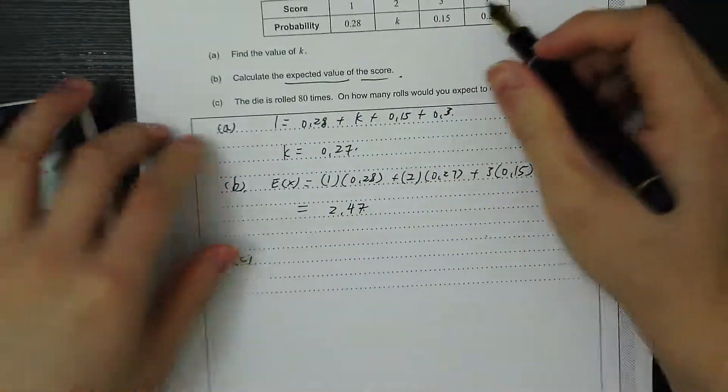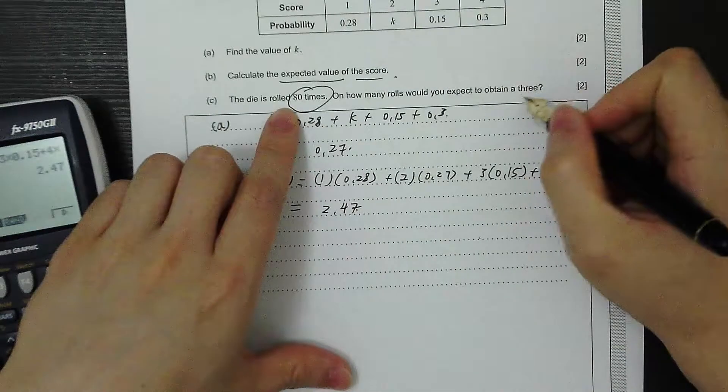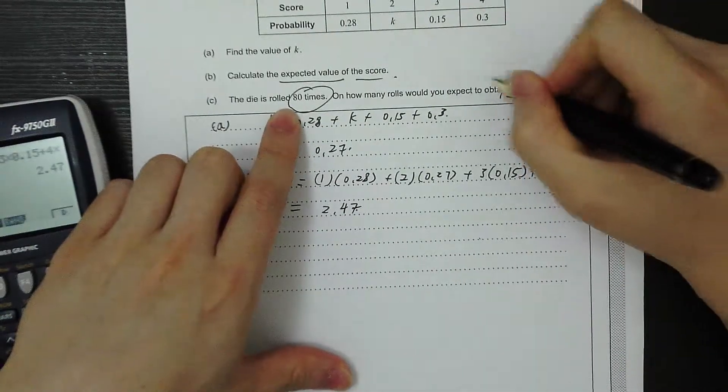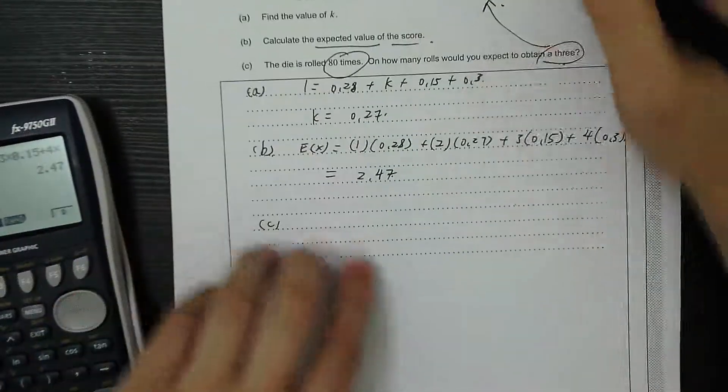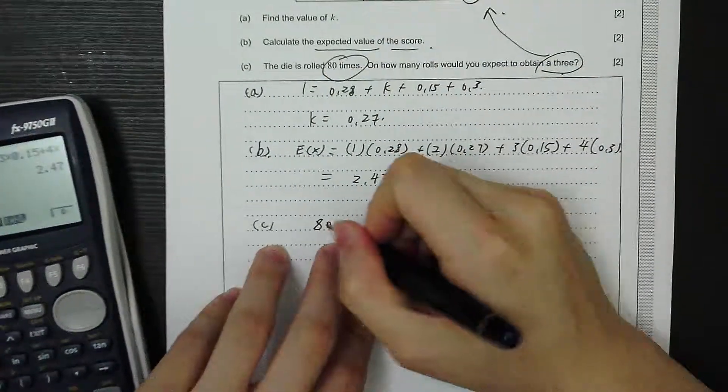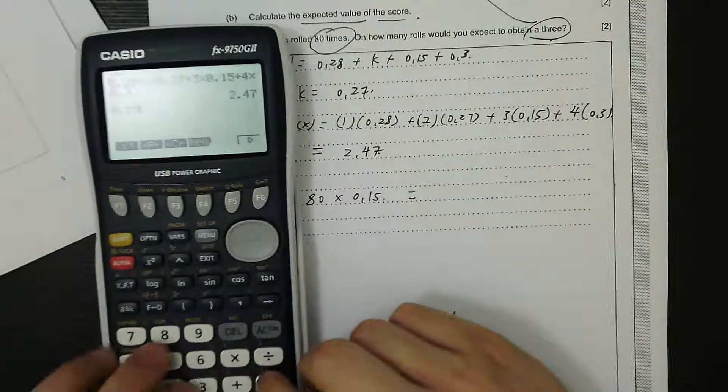Part C: The die is rolled 80 times. On how many rolls would you expect to obtain a 3? To obtain a 3, the probability is 0.15 for one time. So for 80 times, we multiply 0.15 by 80. 0.15 times 80 equals 12 times.